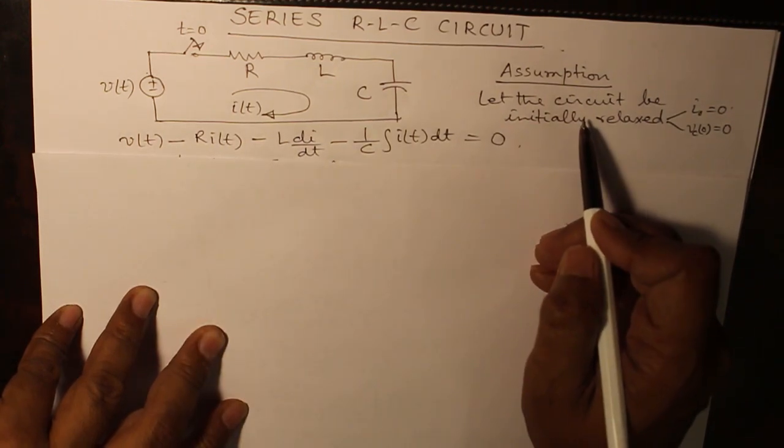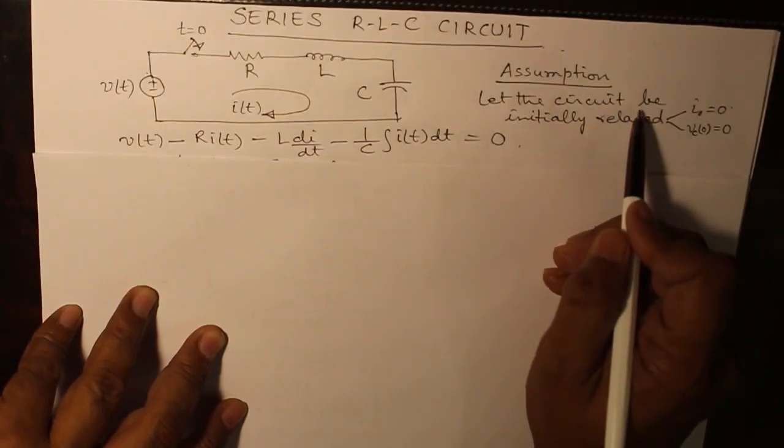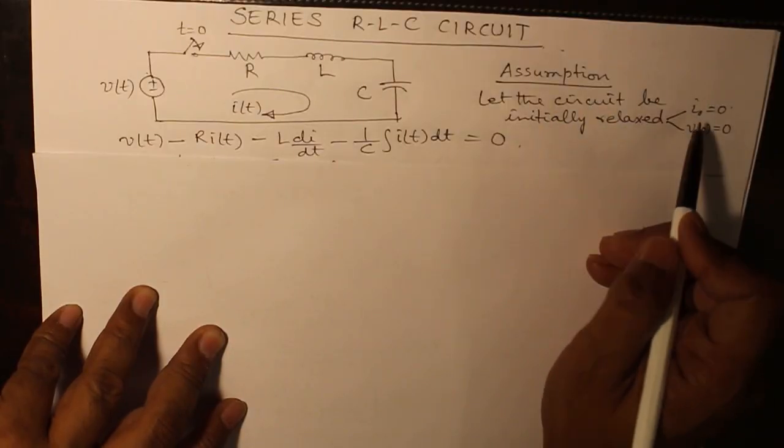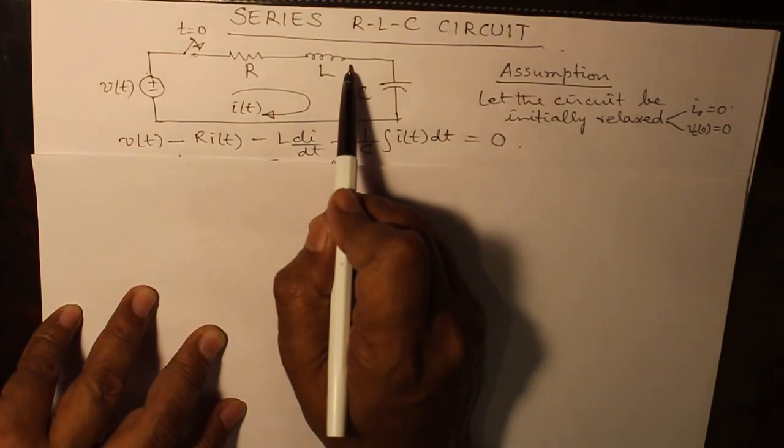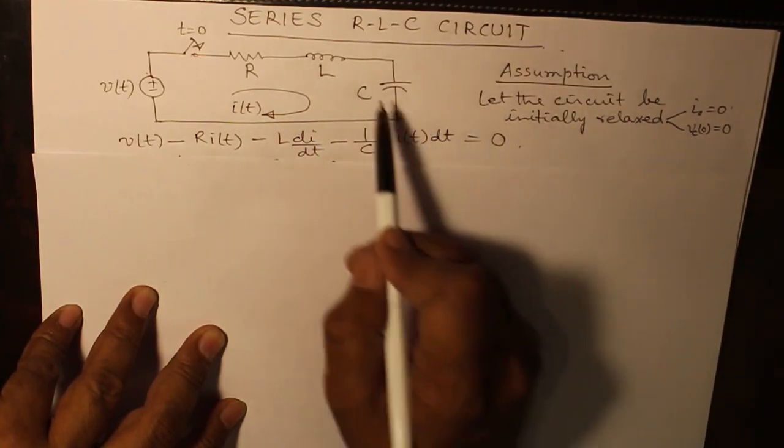Now one assumption we have made while deriving the expression for I(t). The assumption is the circuit is initially relaxed which means that there is no initial current in the inductor and there is no initial capacitor voltage in the capacitor.